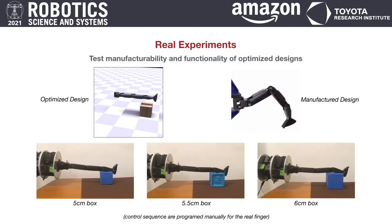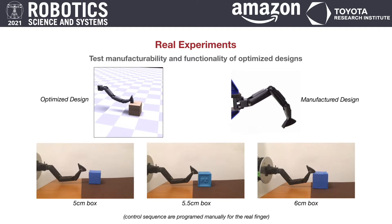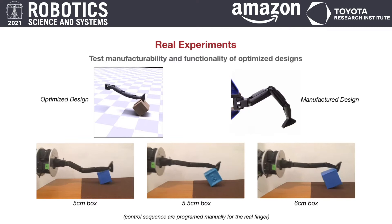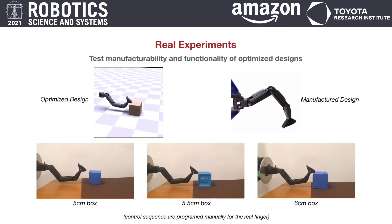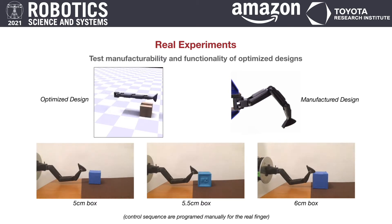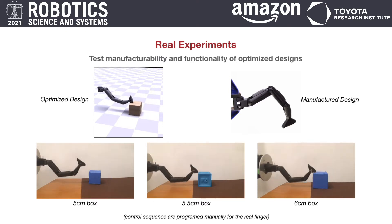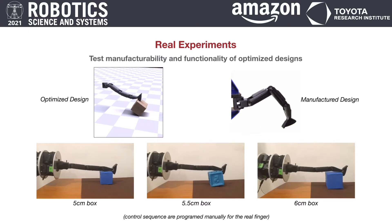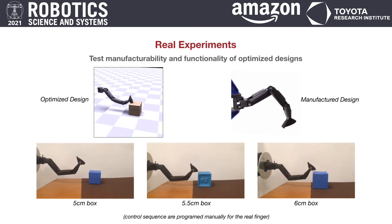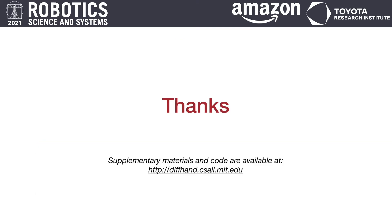We further test the manufacturability and functionality of the optimized designs. We 3D printed the individual finger components and assembled the design optimized for the flipping box task. The motor sequences are manually configured to follow the waypoints from the trajectory optimized by the algorithm. We conducted stress tests on cubes of different sizes to test its functionality and robustness. The experiment shows that the manufactured finger can successfully flip the cubes in the real world. For more details, please refer to our paper and supplementary materials. Thank you.